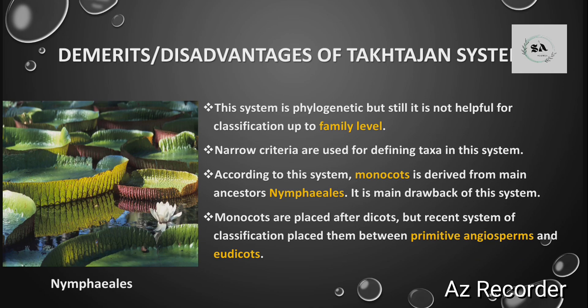Demerits/disadvantages of Takhtajan's system: first, although the system is phylogenetic, it is not helpful when classification is done up to the family level. Second, this system does not provide broad criteria for defining taxa — it provides only narrow criteria. Third, according to this system, monocots are derived from the main ancestor Nymphiales, which is considered incorrect. Monocots are placed after dicots in this system, whereas recent classification systems state that monocots come between primitive angiosperms and eudicots — first primitive angiosperms, then monocots, then eudicots.